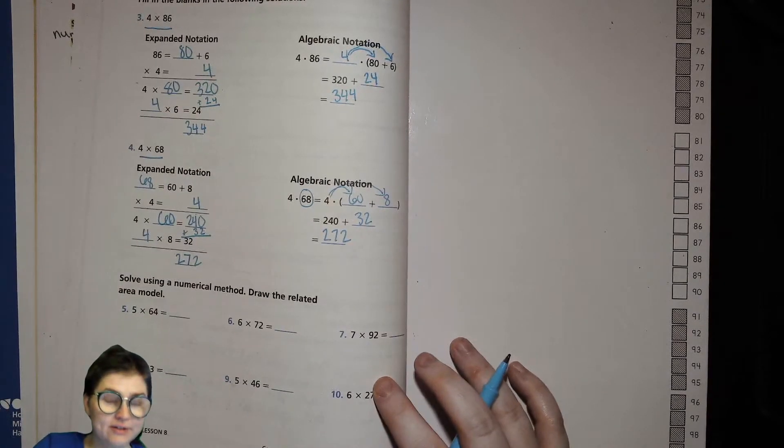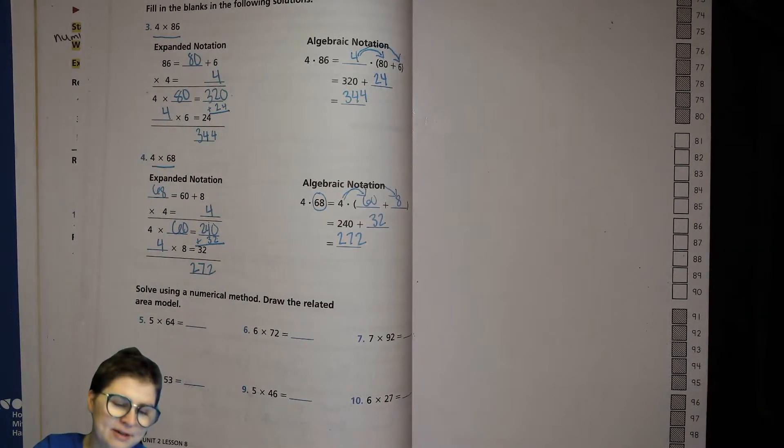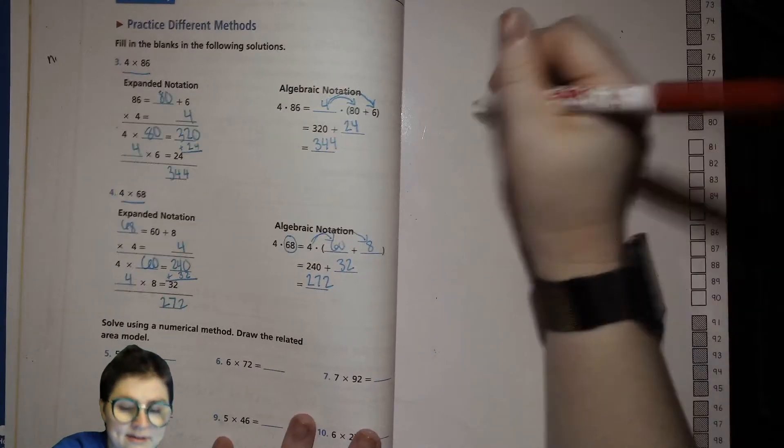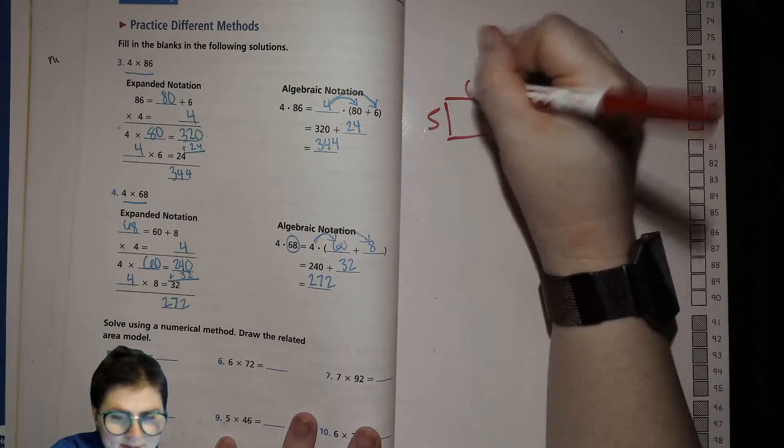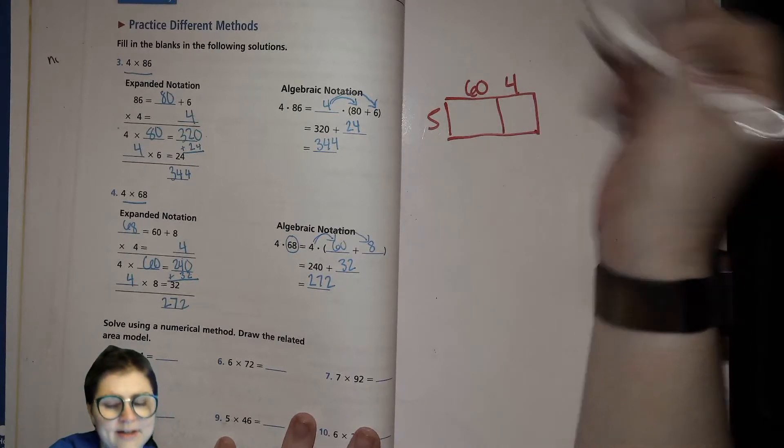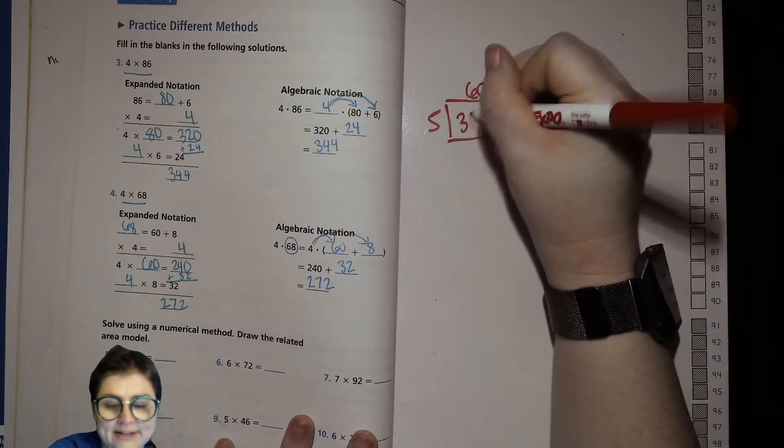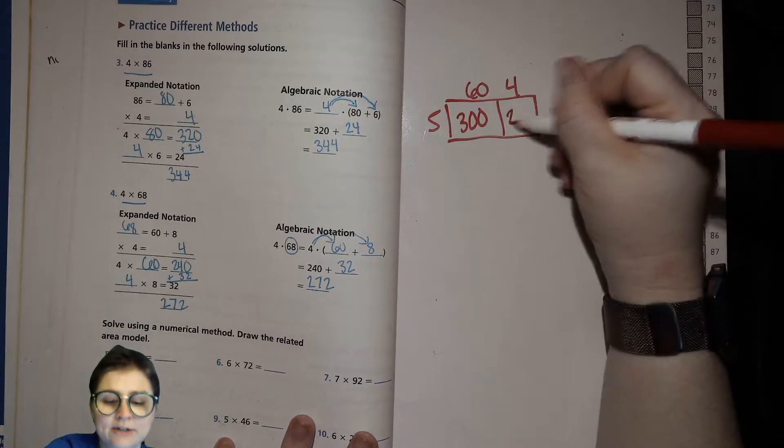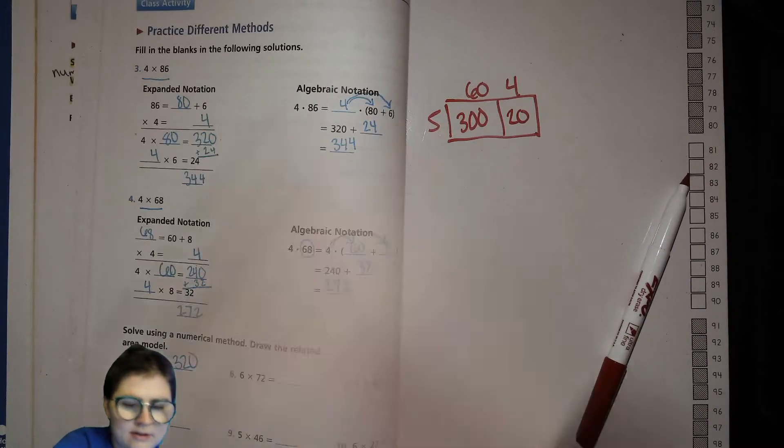Now we're going to practice. If you're feeling good, you can go ahead and try these. Try using a model. I'm going to use my whiteboard for this because I don't really see enough space down here. 5 times 64. 5 times 60. Well, 5 times 6 is 30, so 5 times 60 is 30 tens or 300. And then 5 times 4 is 20. Add those up, 320. That was the place value model.